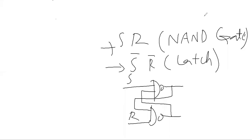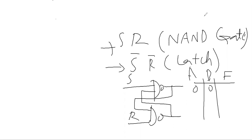The output of this gate is input of this. The truth table of a NAND gate has inputs A and B. When input is 0 and 0, output is 1. When 0 and 1, output is 1. When 1 and 1, output is 0. Whenever any input is 0, the output will be 1. Whenever both inputs are high, output will be 0.